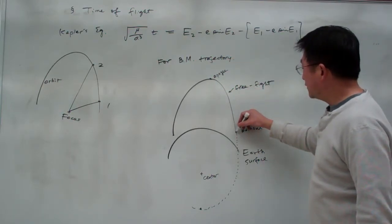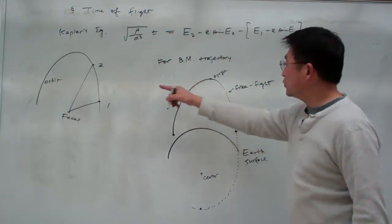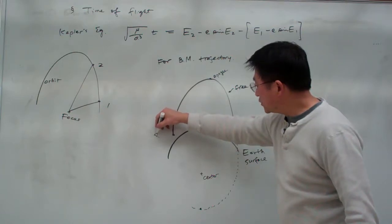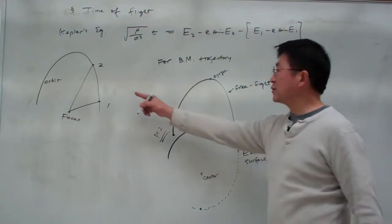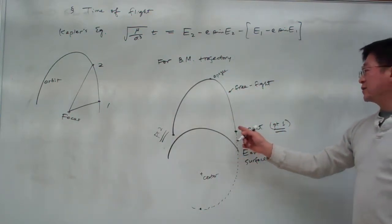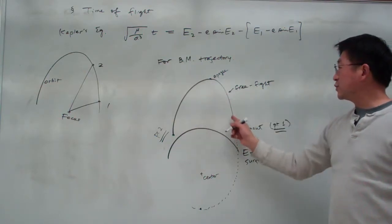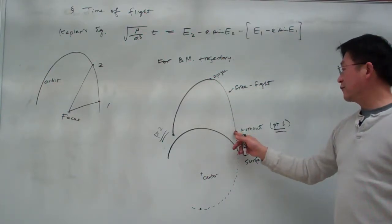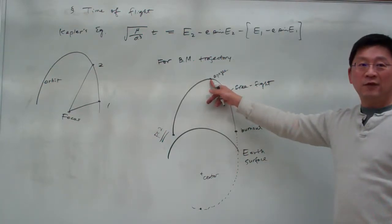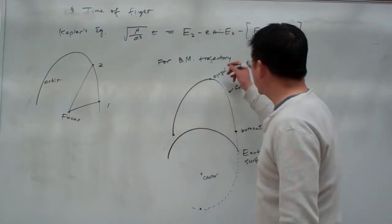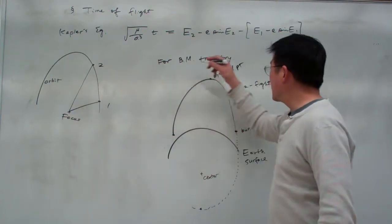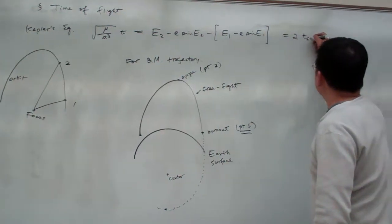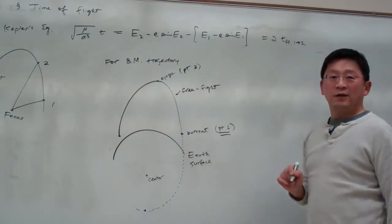The time of flight from here to here corresponds to our drawing: point one is burnout, and point two is reentry. The time of flight for the free flight goes from point one to point two, and since this is symmetric passing through perigee, the total time of flight equals two times the flight time from point one through perigee back to point two.